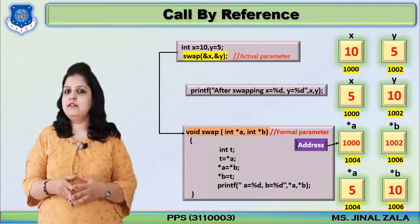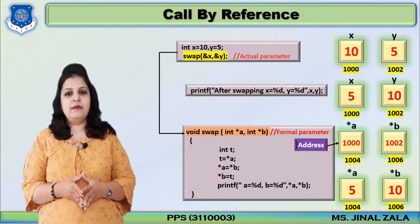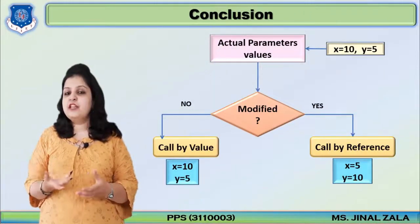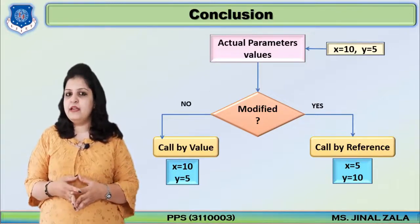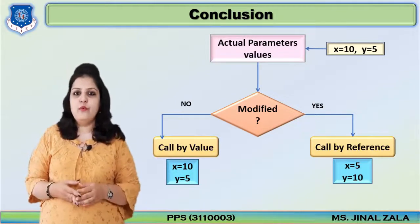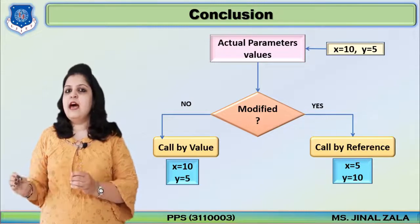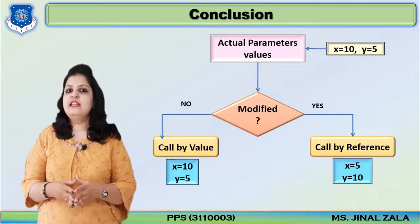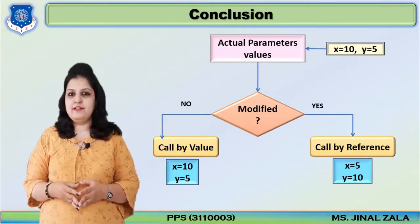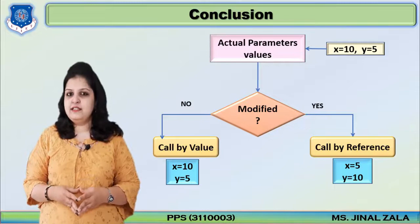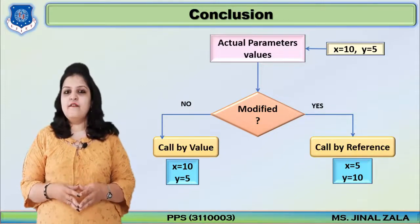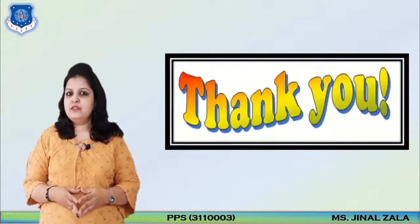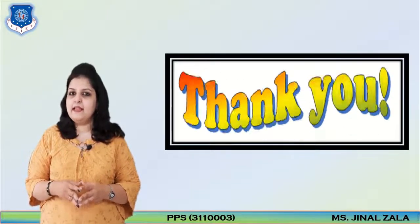In conclusion, in call by value the actual parameters are not modified — they remain as-is. In call by reference, yes, you can see the change in actual parameters as well. This is how we can pass parameters using these two methods. Hope you understood the lecture well. If you have any queries, you can contact me anytime. We will meet you soon — take care, bye bye, thank you so much.